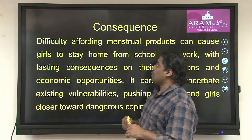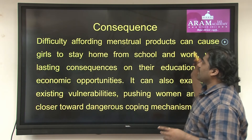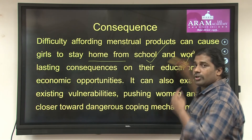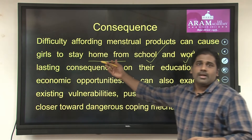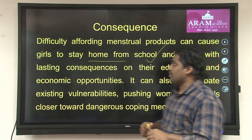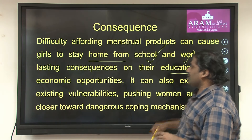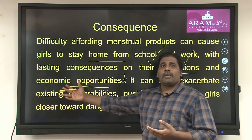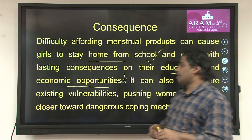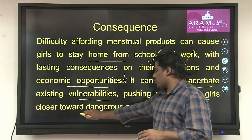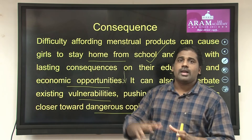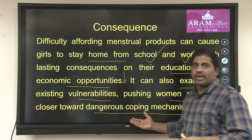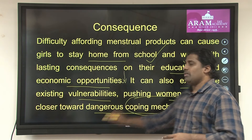What are the consequences? The difficulty in affording menstrual products can cause girls to stay home and there is a chance she may drop out of school. Moreover, she cannot work because she is suffering from the menstrual cycle and has no products to cope with it. The long-lasting consequences are that education and economic opportunities are undermined. It can also lead to vulnerabilities pushing women and girls towards dangerous coping mechanisms — for example, girls in Kenya at times choose prostitution as a coping mechanism.